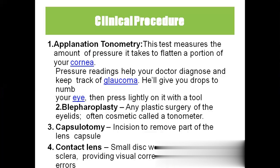The first one is applanation tonometry. This is a test done for glaucoma. Glaucoma is a condition caused by increased intraocular pressure. They will test the amount of pressure needed to flatten your cornea. Usually they will put eye drops to numb the eye. When you go to the ophthalmology clinic, they will ask you to take the eye drops first — one is to prevent infections, and the other to numb the eye so it won't cause any discomfort.